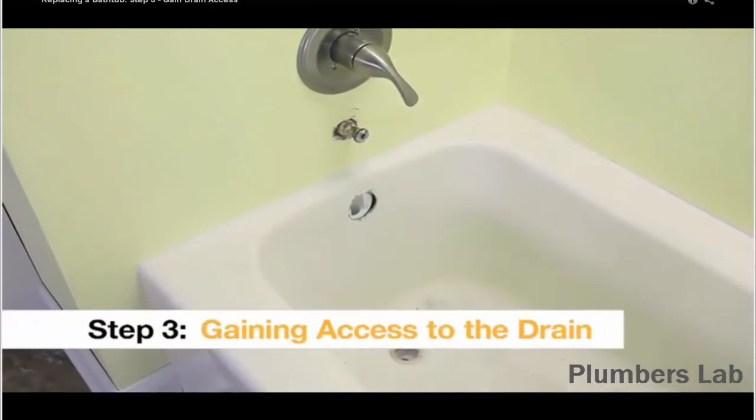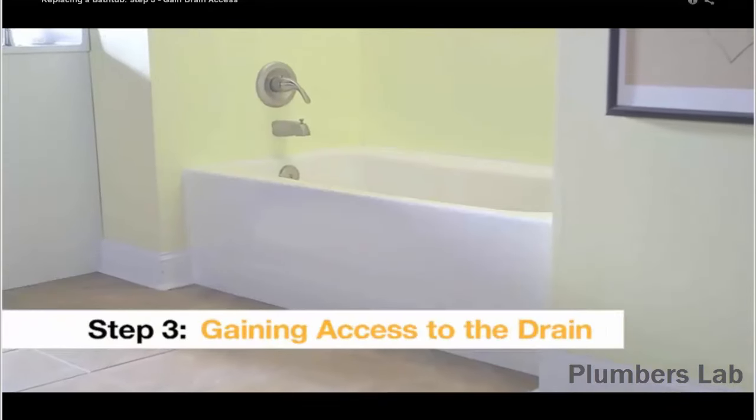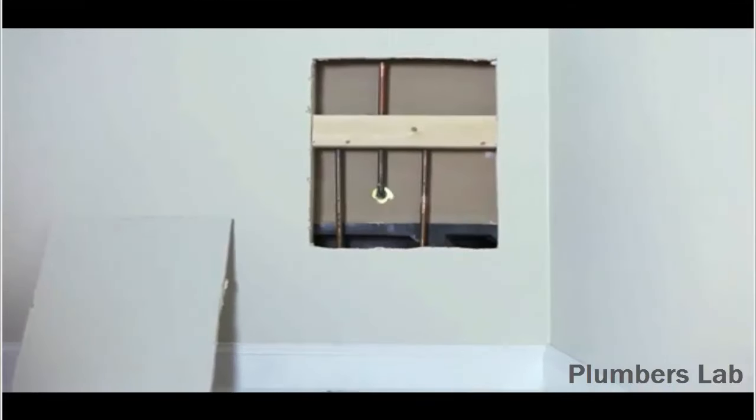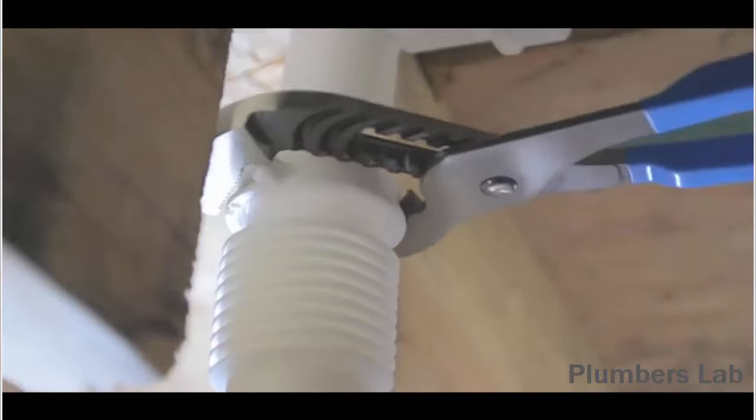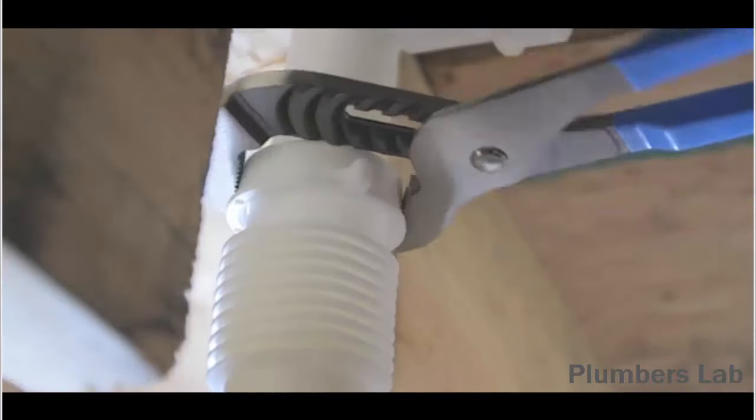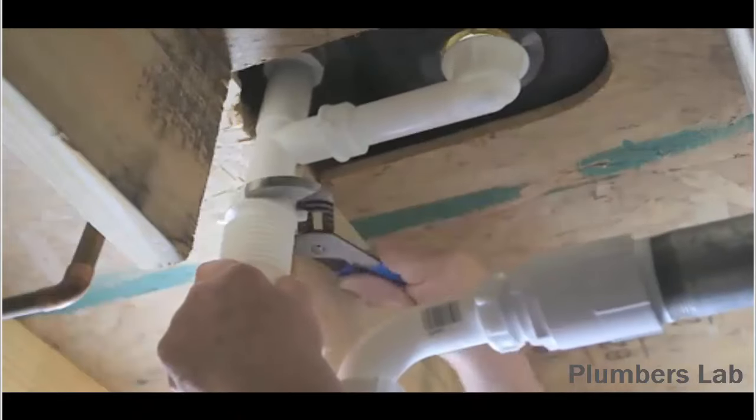To disconnect the drain, you'll need to get access to the underside of the tub, either from behind the wall or through the ceiling below the bathroom. Use a pair of channel lock pliers to disconnect the pipes below the T where the drain and overflow valve meet.